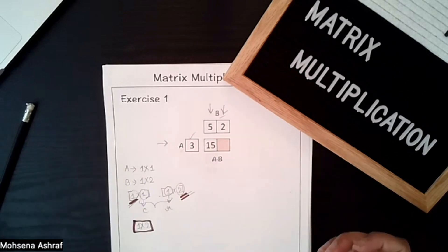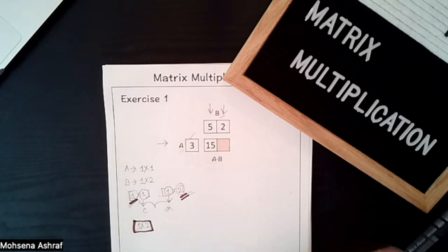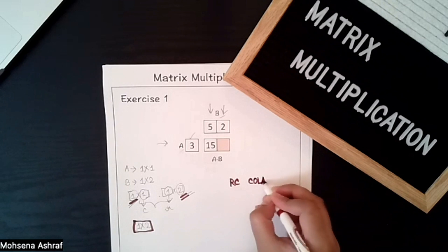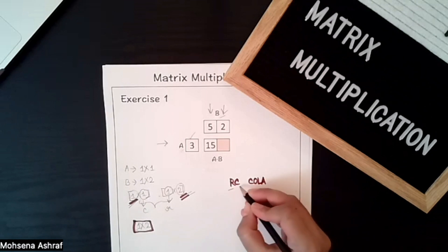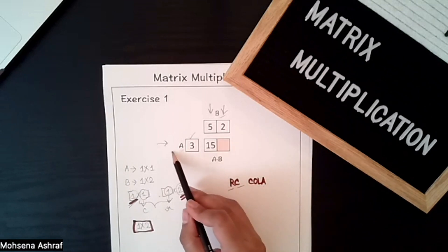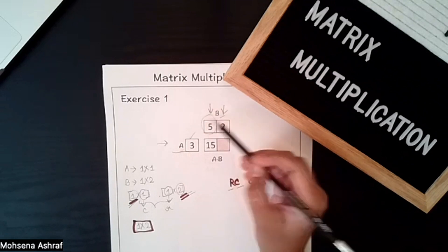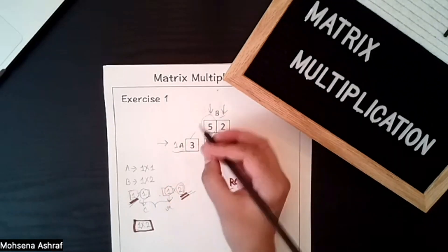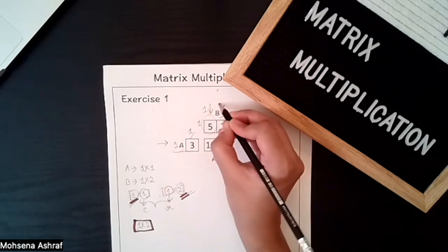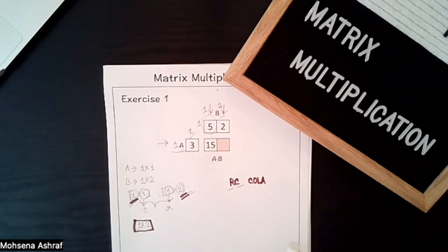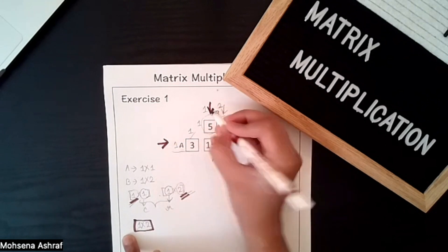There's another thing to keep in mind. One of my high school teachers said that in our country there is a drink named RC Cola, similar to Coca-Cola — and that's how I remembered. R means row and C means column. So we have to multiply the first matrix's row with the second matrix's column.